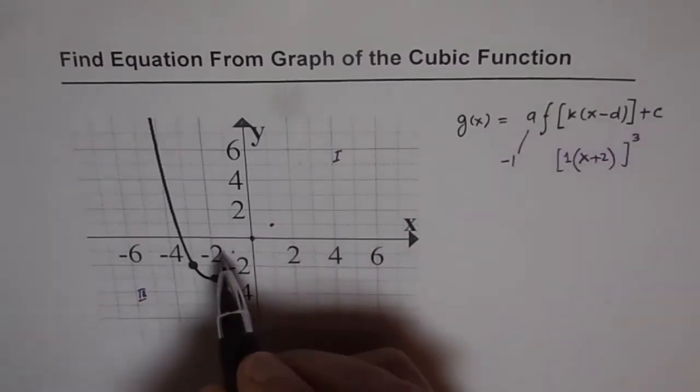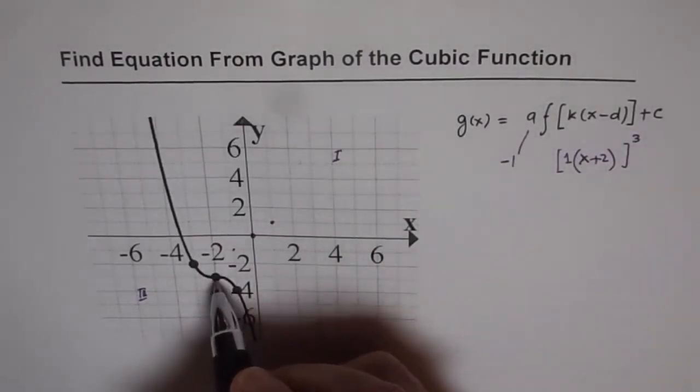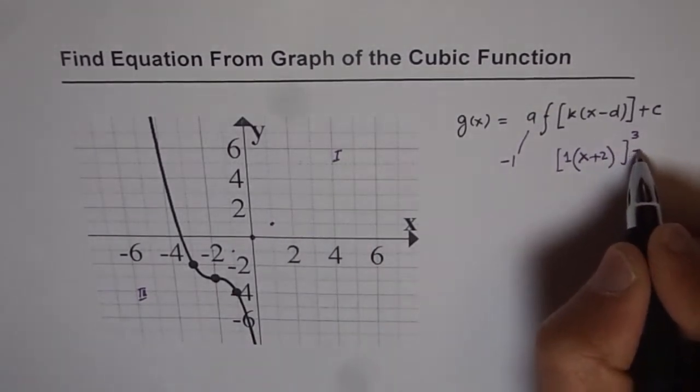And c is 2 units down, 1, 2, 3 units down. So it is minus 3.